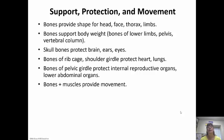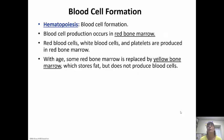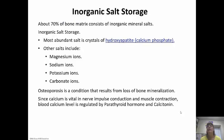Bones also provide points of attachment for muscles so we can move. Hematopoiesis is blood cell formation — blood cell production occurs in the red bone marrow, where red blood cells, white blood cells, and platelets are all produced. With age, some red bone marrow is replaced by yellow bone marrow, which stores fat and does not produce blood cells. Red bone marrow produces blood — blood is red; yellow bone marrow stores fat — fat is yellow.